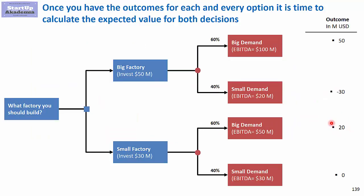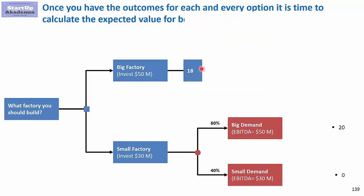We can also present it visually. We take the outcome of each option and multiply it by its probability, then do the same for the other outcome and add them together. That is how we get the expected value of 18 million for the big factory.